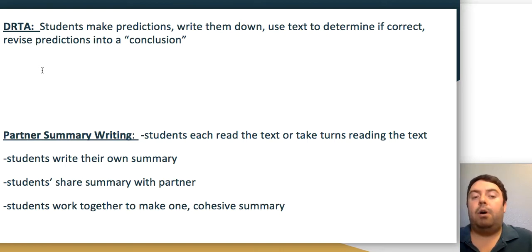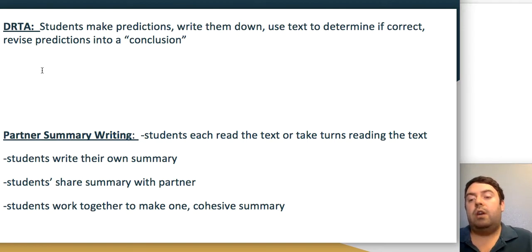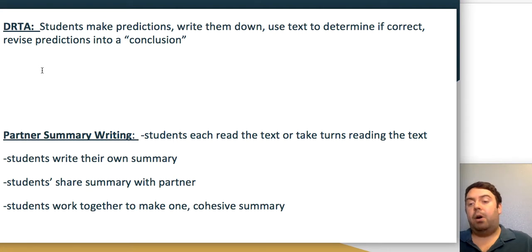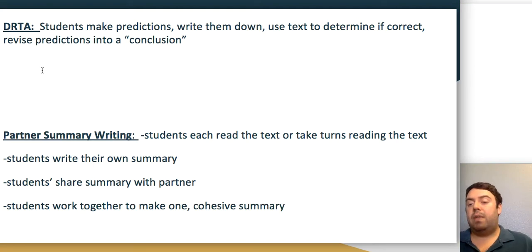Another activity is partner summary writing. Each student reads the text independently and writes their own summary. Then they share their summary with their partner. As a partner group, students combine the best elements of both summaries to produce one cohesive group summary.